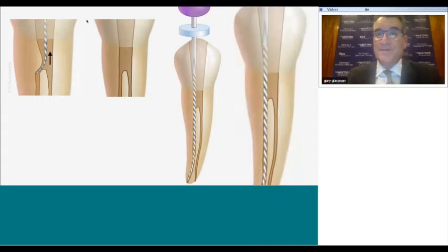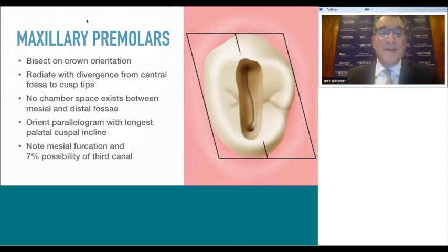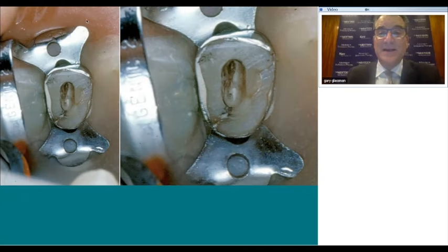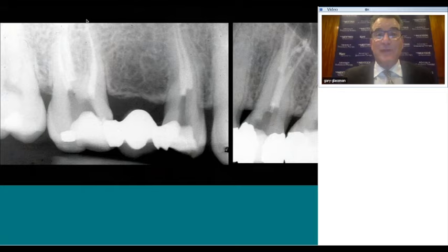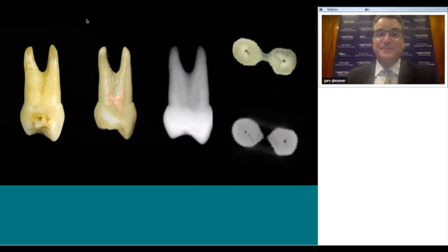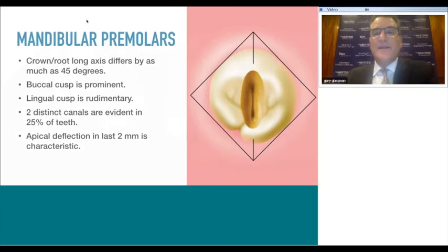Maxillary premolars: most first premolars have two root canals, some one, and 7% may have a third canal. Expect the unexpected—if you find one canal, look for two; if you find two, look for three. Sometimes there can be four or even five. The human anatomy is wonderfully variable. Always expect the unexpected, and make your access directly into the pulp chamber, then peel your way out.